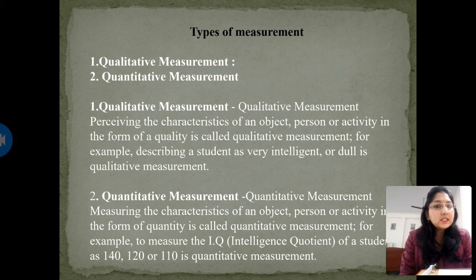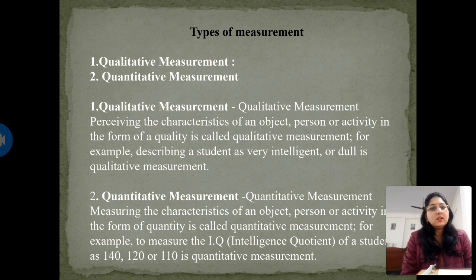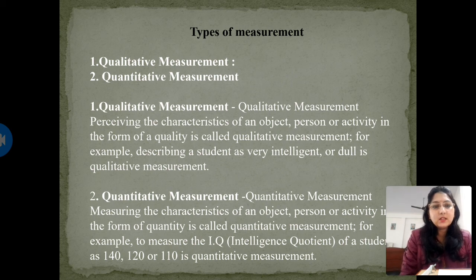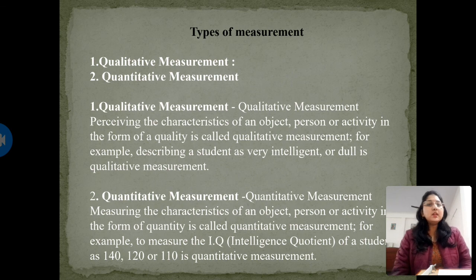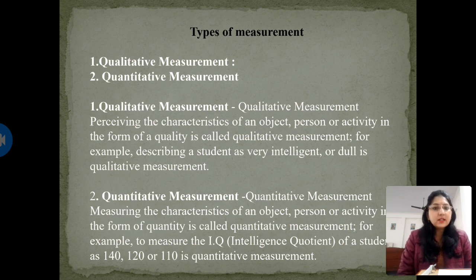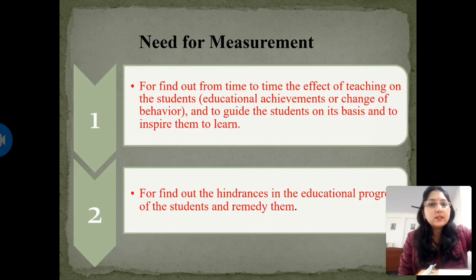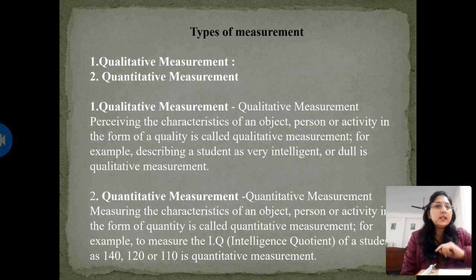Quantitative measurement means measuring the characteristics of an object, person, or activity in the form of quantity. For example, measuring a student's IQ as 140, 120, or 110 is quantitative measurement — it defines characteristics using numbers. So students, today we have discussed these two types of measurement: qualitative and quantitative. We will continue this topic in the next class. Thank you, students.